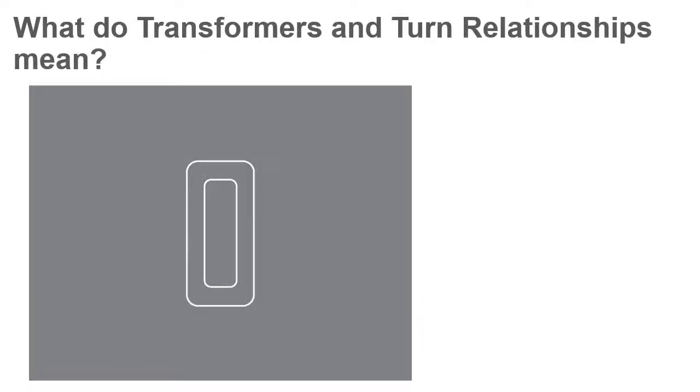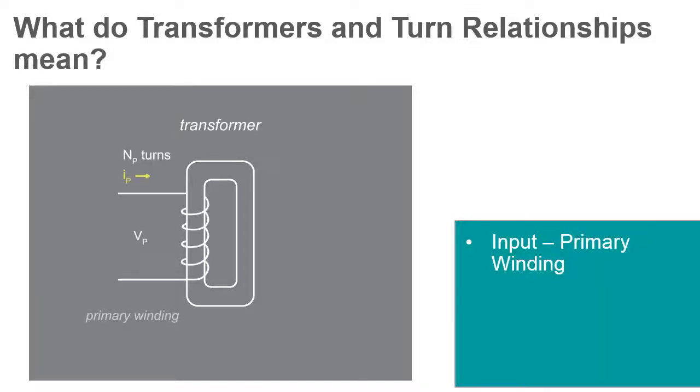A typical transformer is composed of a magnetic core with two coils of wires wrapped around it. One coil is on the input side of the transformer and is called the primary winding.